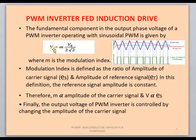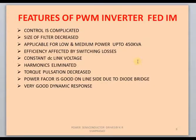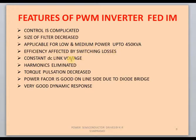By varying M we can change the voltage V. The M value depends upon the amplitude of the carrier signal, so the output voltage of the PWM inverter is controlled by changing the amplitude of the carrier signal. Features of the PWM inverter: the control scheme is somewhat complicated since a separate gating circuit is required. The filter size is decreased because lower harmonics are reduced. It is applicable for low and medium power up to 450 kVA. Efficiency is affected by switching losses. Constant DC link voltage is used, harmonics are eliminated, torque pulses are decreased, and the line power factor is very good.